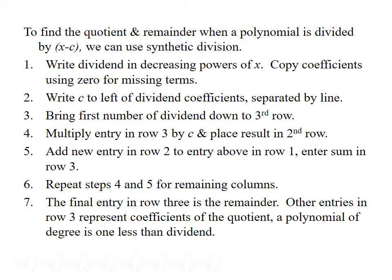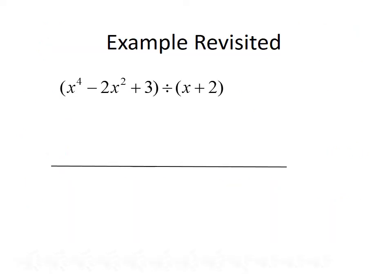Let's do an example to illustrate how synthetic division works. We'll start with the same example we worked using long division: x to the fourth minus 2x squared plus 3 divided by x plus 2. For synthetic division, we only work with the coefficients of the dividend: 1, 0, negative 2, 0, and 3. We write the value of c to the left. Since we're dividing by x plus 2, c equals negative 2 — we take the opposite value of what appears in the problem.